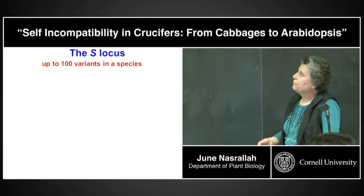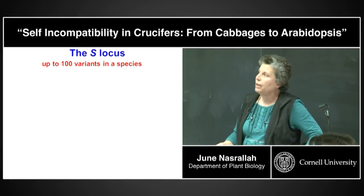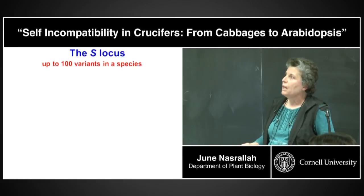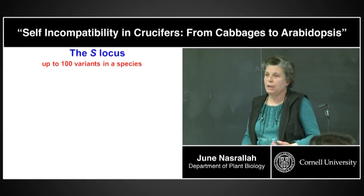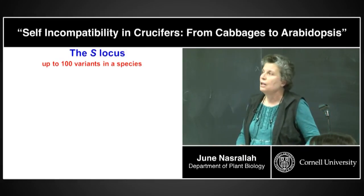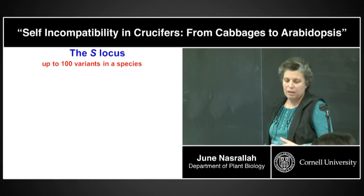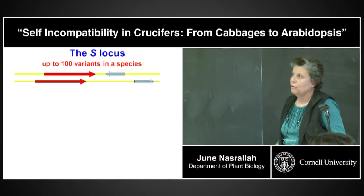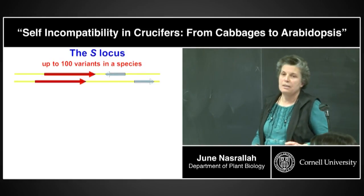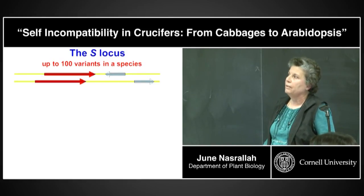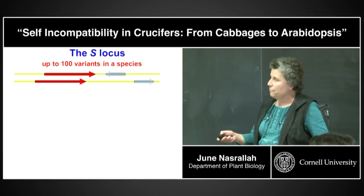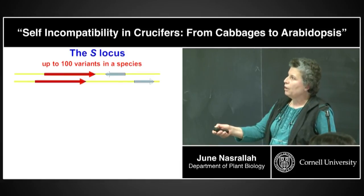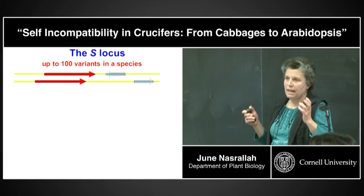The S-locus is extremely polymorphic; there are many variants occurring naturally in any population, and genetically it behaves as a Mendelian locus. When we started this work, we thought we were going to isolate a single gene. It turns out, however, that the S-locus is a complex locus consisting of two genes that together determine specificity in the self-incompatibility response. We designate each one containing these two genes as an S-locus haplotype.